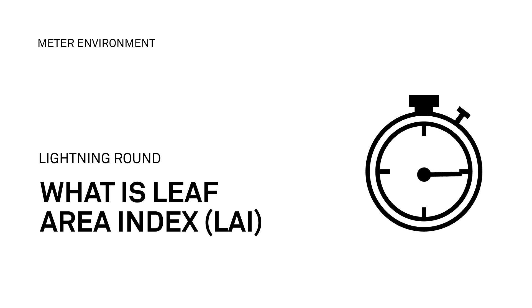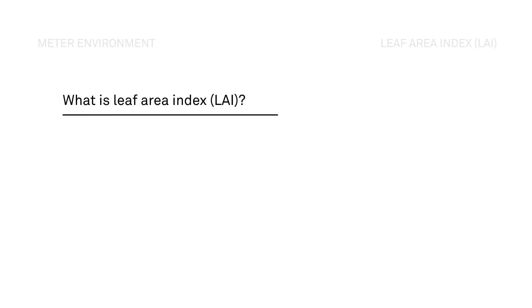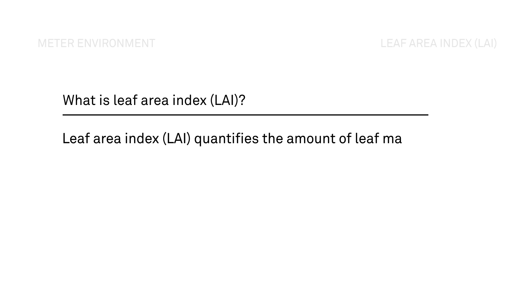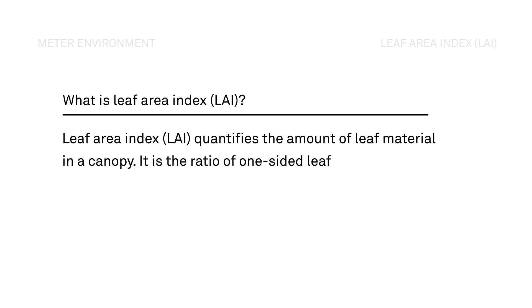Let's talk about leaf area index. What is leaf area index, or LAI? LAI quantifies the amount of green leaf material in a canopy. By definition, it's the ratio of one-sided green leaf area per unit ground area.